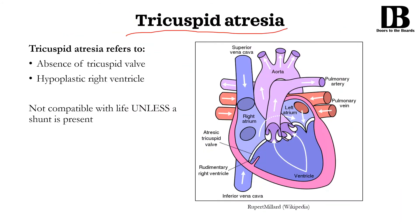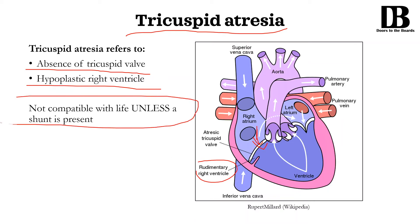Next up is tricuspid atresia, and from the name itself, you have atresia — absence — of the tricuspid valve. It's usually accompanied by a hypoplastic right ventricle. You usually need blood to fill up the right ventricle in order to actually form it up and balloon it up, but since you're not forcing any blood into the right ventricle, it stays rudimentary. This condition is also not compatible with life and requires a shunt in order to allow the baby chances of survival.